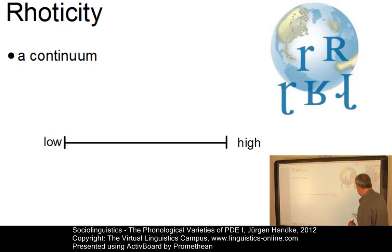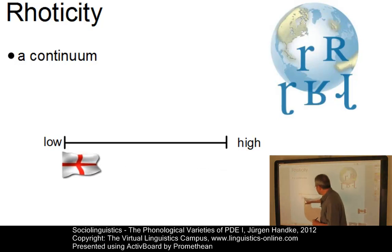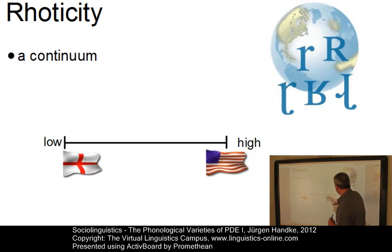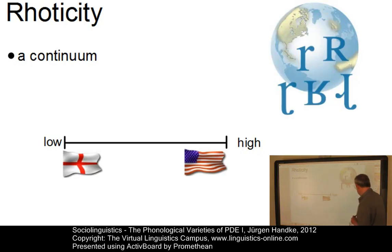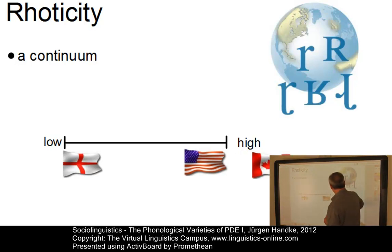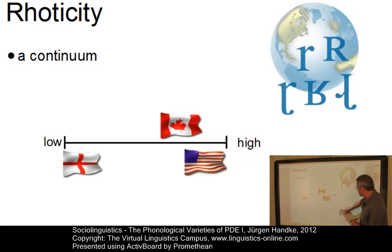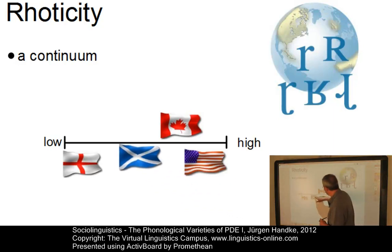The vowels must be of a particular kind. For example, you can say 'India-r-and China' instead of 'India and China'. These examples show that no phonological dialect is 100% rhotic or non-rhotic. Thus it seems reasonable to define the phonological dialects in terms of degrees of rhoticity rather than in a binary fashion. Received Pronunciation would be relatively low on the rhoticity scale, whereas North American English is relatively high. Canadian English would be lower than US varieties, and Scottish English somewhere in the middle.